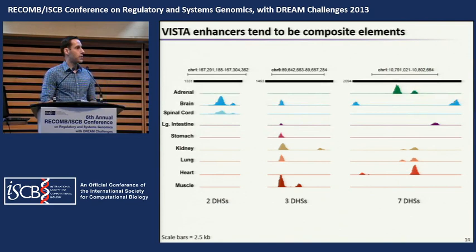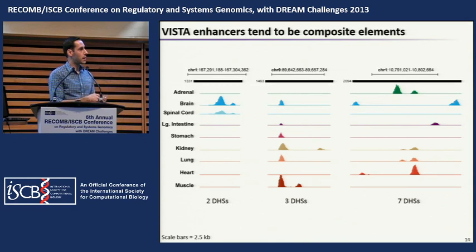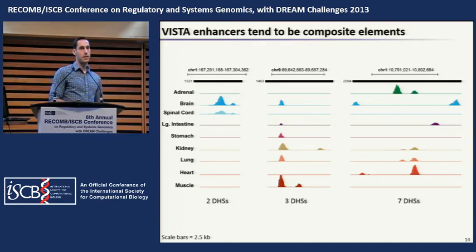Let me highlight two examples. First, VISTA elements tend to be composite elements. One contains only two DHSs specific to neural tissue, while others contain multiple DHSs — one active across multiple tissues, one specific to muscle, and one quite large element spanning two and a half kilobases containing seven DHSs with a variety of tissue specificities. If you put such an element into a mouse, it will drive beta-gal expression in multiple organs and tissues.